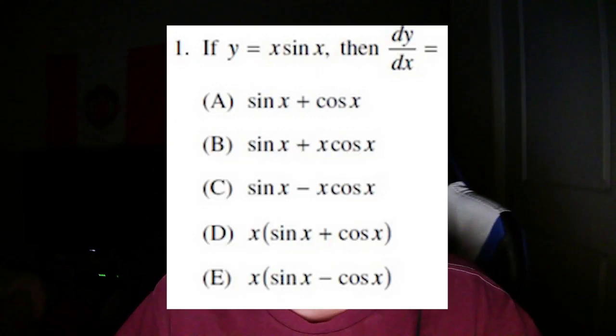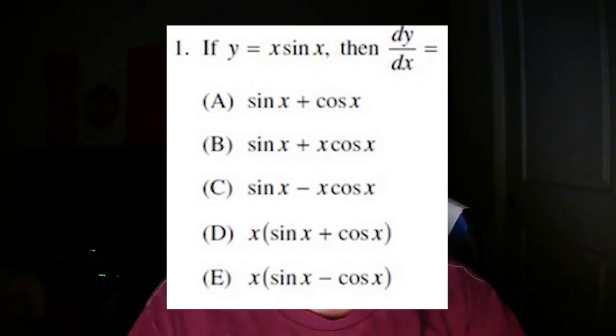First we should understand the format of the AP Calculus test. There's the multiple choice section, and it's divided into two parts. The first part is no calculator, and the second part is calculator. The first part has 30 questions, and the second part has 15 questions.